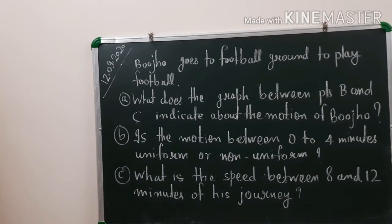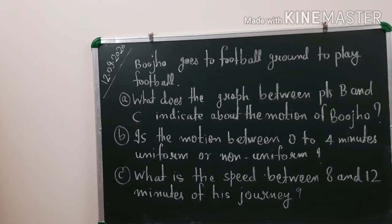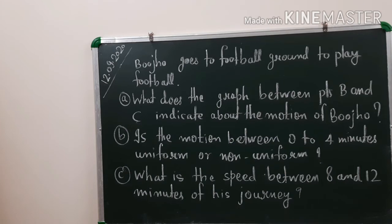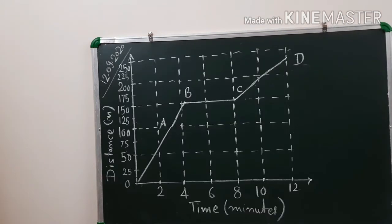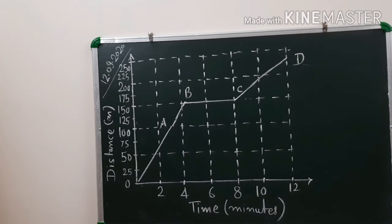Bujo goes to the football ground to play football. The first question is: what does the graph between points B and C indicate about the motion of Bujo? The second question is: is the motion between 0 to 4 minutes uniform or non-uniform? And the last one is: what is the speed between 8 and 12 minutes of his journey? Here you can see the graph. First question: what does the graph between B and C indicate?